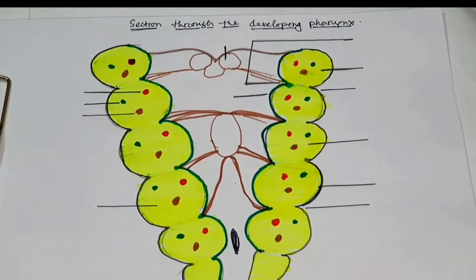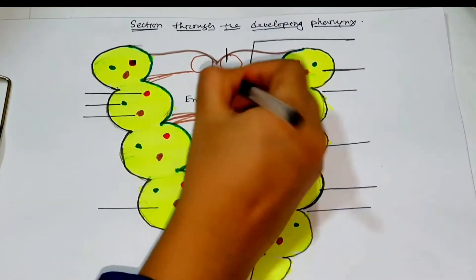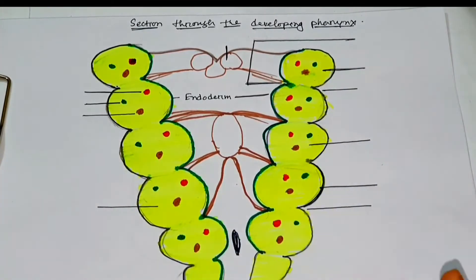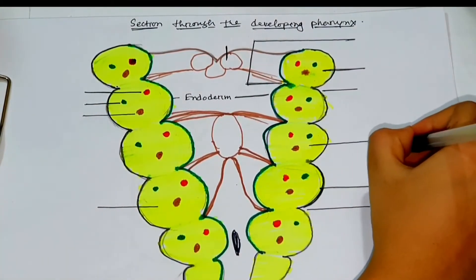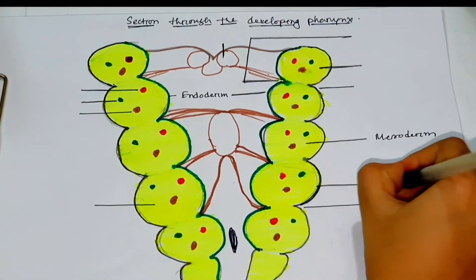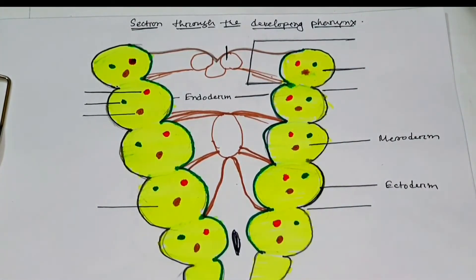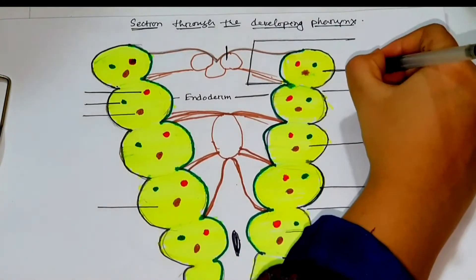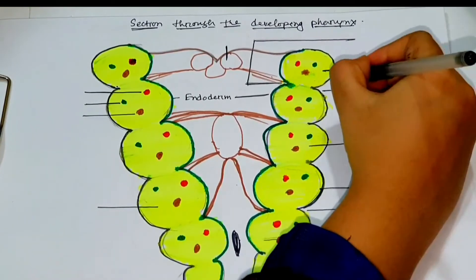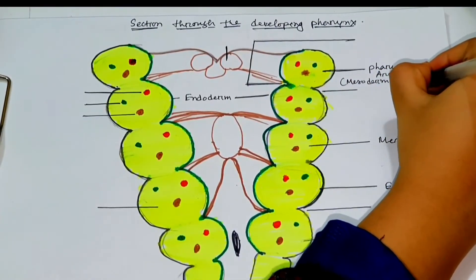This is the section through the developing pharyngeal region. As you can see, it has three layers or linings. The inner lining is the endodermal lining. The middle yellow portion, outer to the endodermal lining, is the mesodermal lining. The outermost layer is the ectodermal lining. From inside to outwards, the three layers are endoderm, mesoderm, and ectoderm. This mesodermal lining takes part in the formation of pharyngeal arches. Each pharyngeal arch consists of a core of mesodermal tissue covered on the outside by surface ectoderm and on the inside by epithelium of endodermal origin.